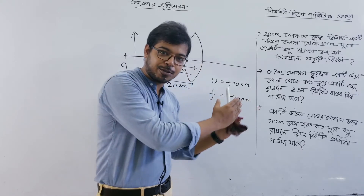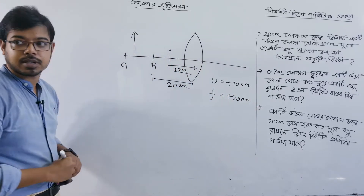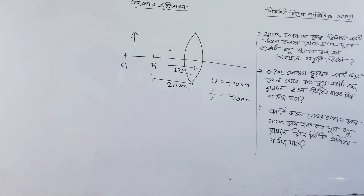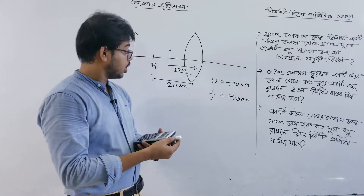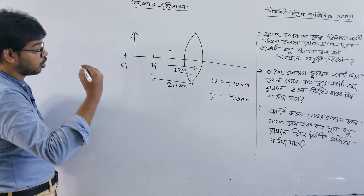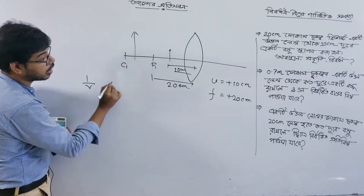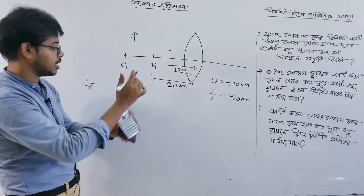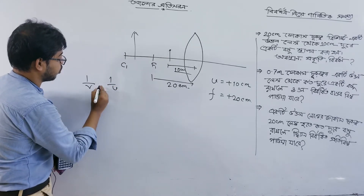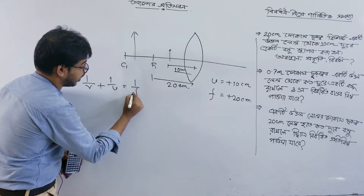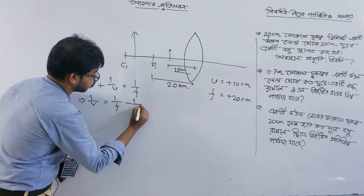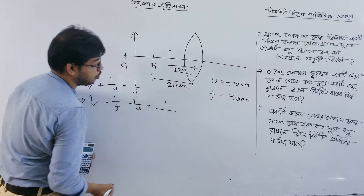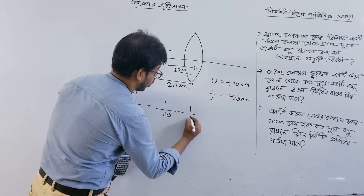Okay, I will solve this mathematically. I will not use a calculator. Using the lens formula: 1 by V equals 1 by F minus 1 by U. So 1 by V equals 1 by F minus 1 by U, where F is 20, so that's 1 by 20 minus 1 by 10.